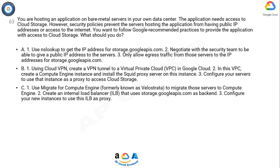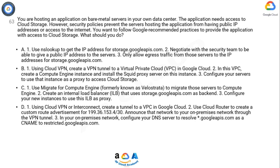Option C: 1) Use Migrate for Compute Engine (formerly known as Velostrata) to migrate those servers to Compute Engine. 2) Create an internal load balancer (ILB) that uses storage.googleapis.com as a backend. 3) Configure your new instances to use this ILB as a proxy.